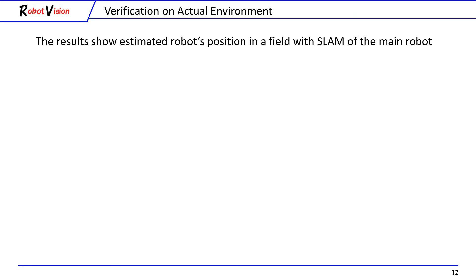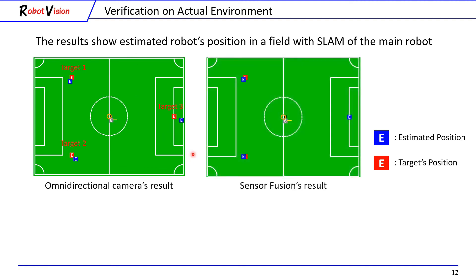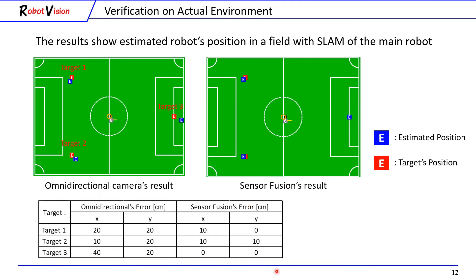After applying sensor fusion to our current system, we conducted a verification on an actual soccer field. The result shows the estimated robot position in the field using SLAM of the main robot. The main robot is placed at the center of the field, with a total of three targets around it. This figure shows the omnidirectional camera result, where the red box represents the actual target position and the blue box represents the estimated target position. The estimated target position is off from the actual position. The sensor fusion result shows lower distance error compared to the omnidirectional camera result. This table shows the error of each target in the field.